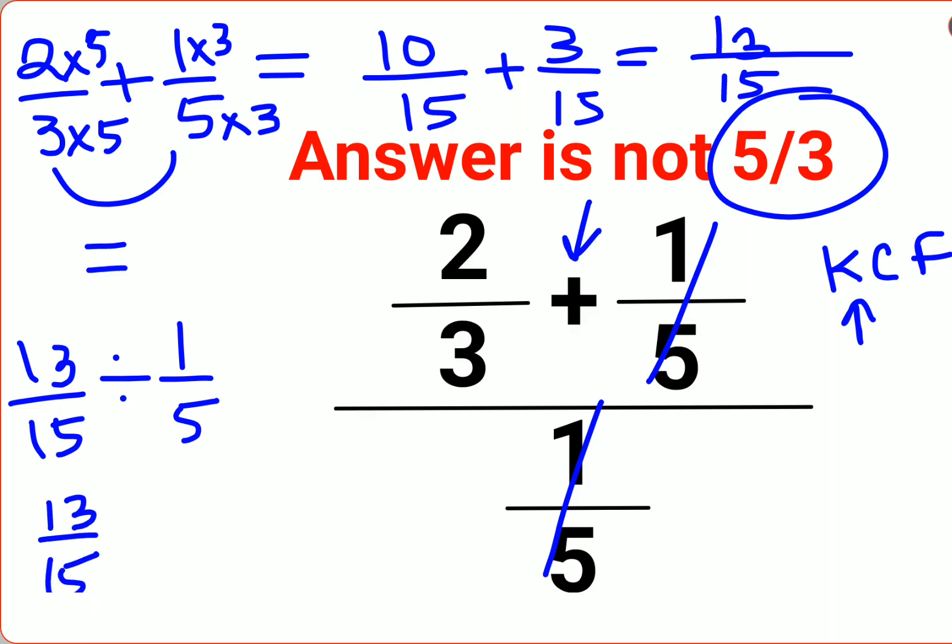F stands for flipping, taking reciprocal of 1 upon 5, which is 5. So this is 1's are and 3's are. So the answer for this question is 13 upon 3.